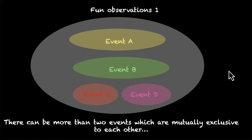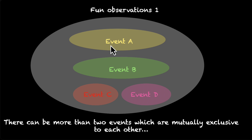A couple of interesting observations. The first one is there can be more than two events which are mutually exclusive to each other. In this image, you can see that there are four events A, B, C, and D, and you can pick any two of them — they'll be mutually exclusive. Event C and event A cannot happen together, event B and D cannot happen together, and so on. So it's not just for two events; you can have a bunch of events which are mutually exclusive to each other.